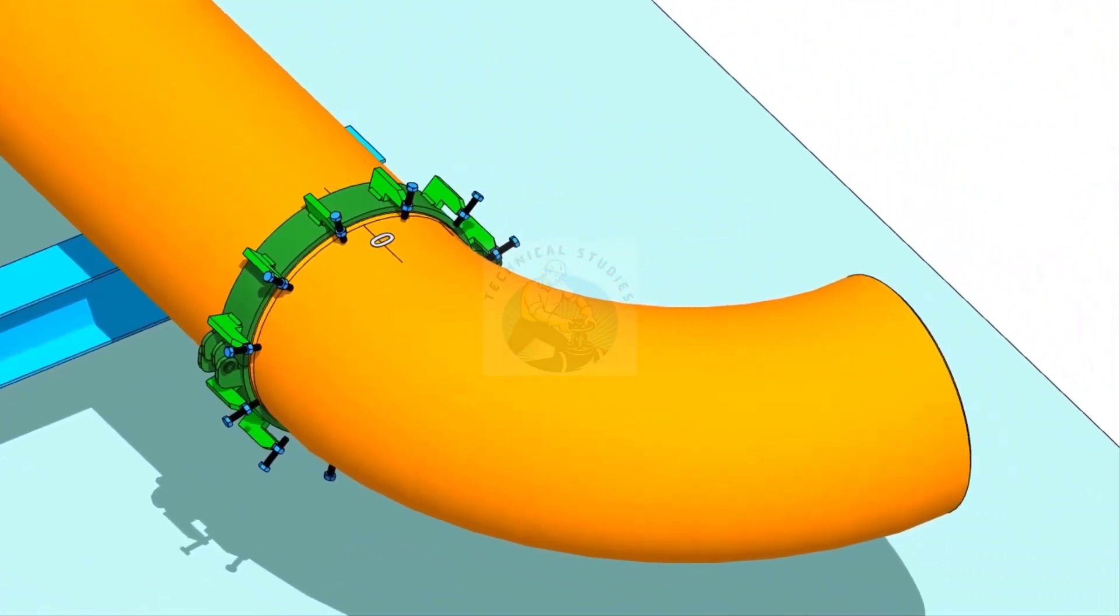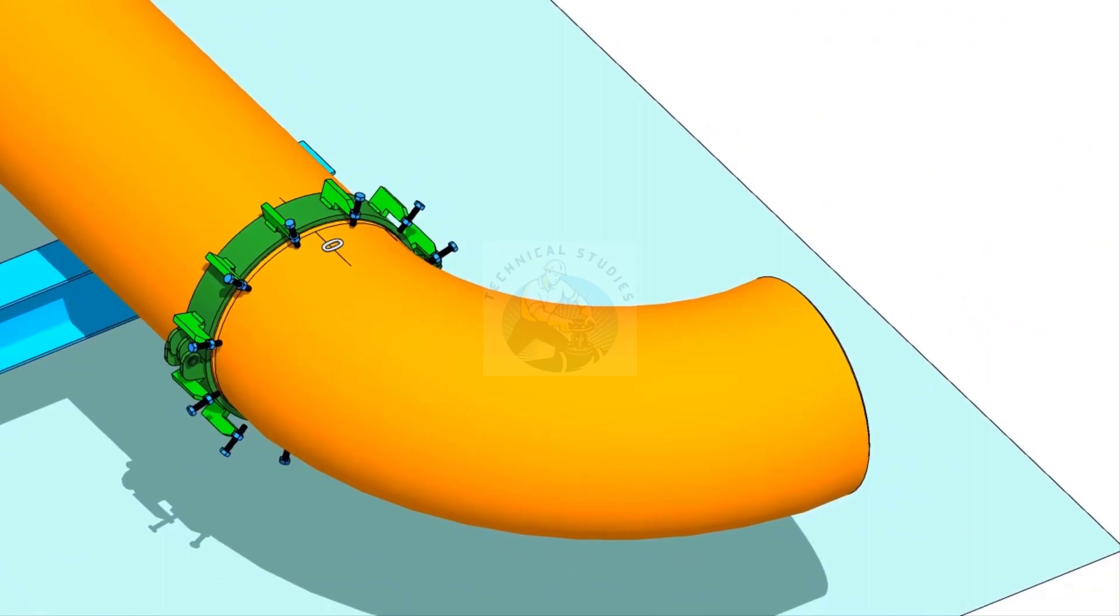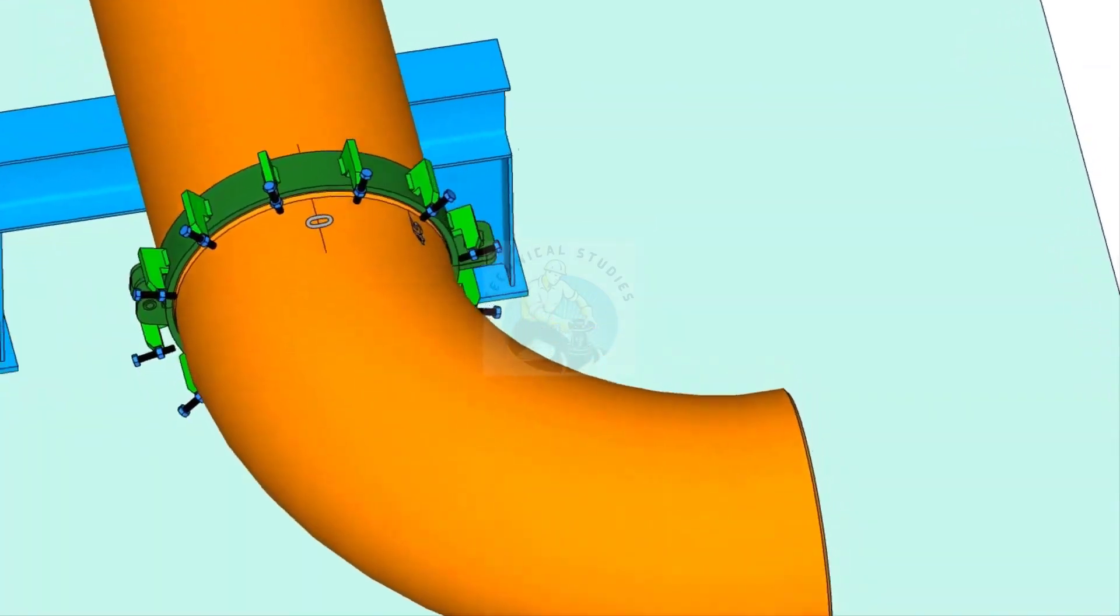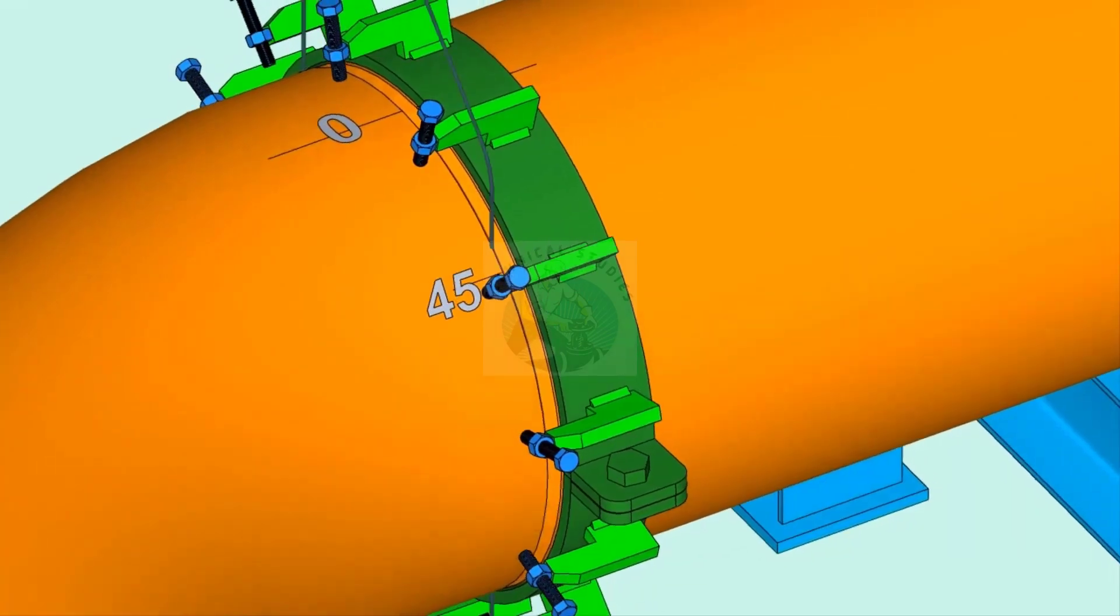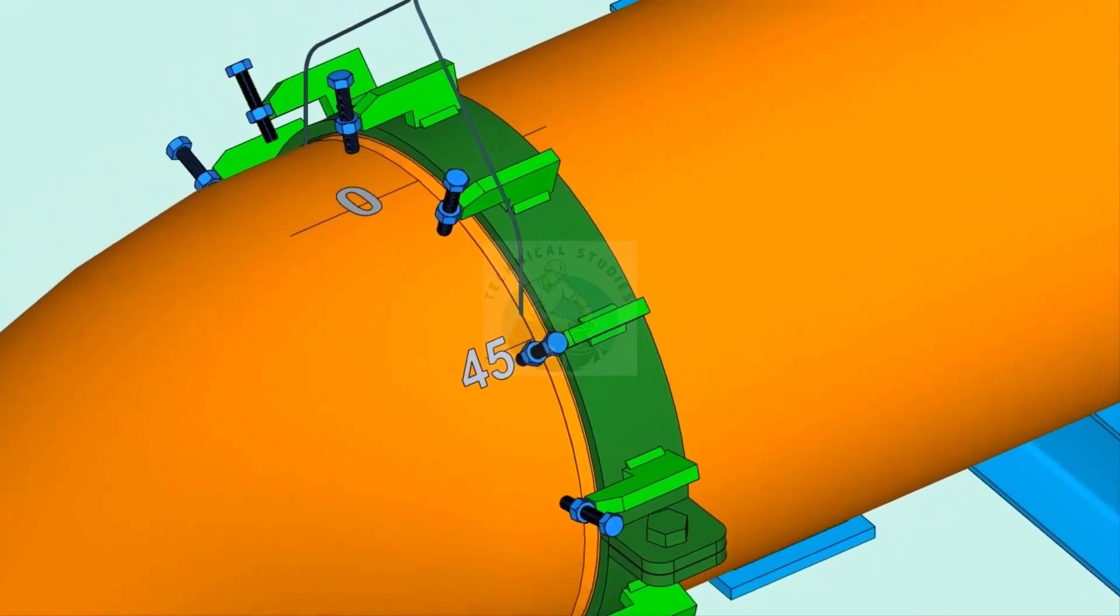Put the elbow on the pipe clamp. Make sure the marked end is near to the pipe. Arrange proper supports below the elbow. Put the gap rod in the joint.